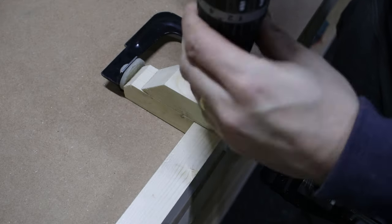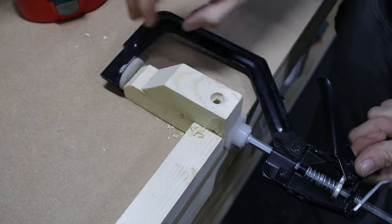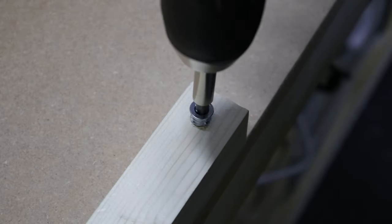Then on both ends, I placed the threaded insert for the stop block, so I can make shorter cuts on the opposite side where the miter saw is.